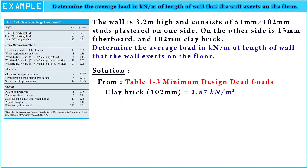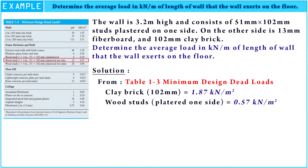After that, we see the frame partitions and wall related to our problem. Wood studs plastered on one side is 0.57 kilonewton per square meters.